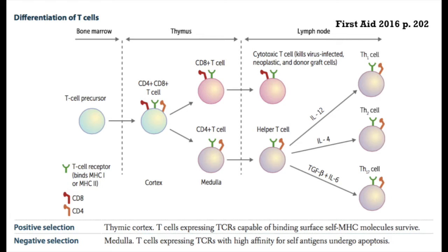As double positive thymocytes — still expressing both CD4 and CD8 — mature in the medulla and undergo positive and negative selection, some TCRs will bind with higher affinity to MHC class 1 and others to MHC class 2. Those binding with higher affinity to MHC class 1 mature into CD8 T cells; those binding with higher affinity to MHC class 2 mature into CD4 T cells.